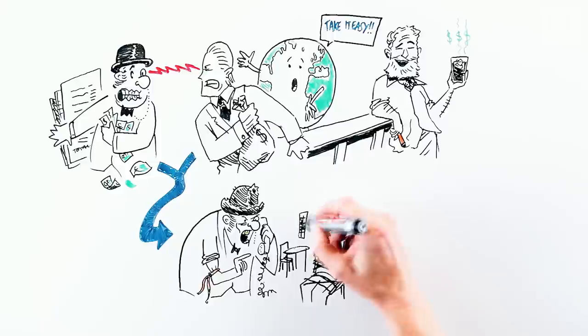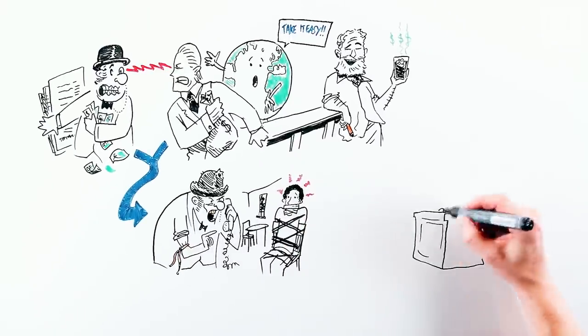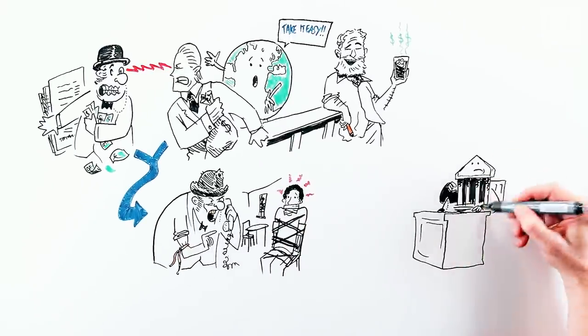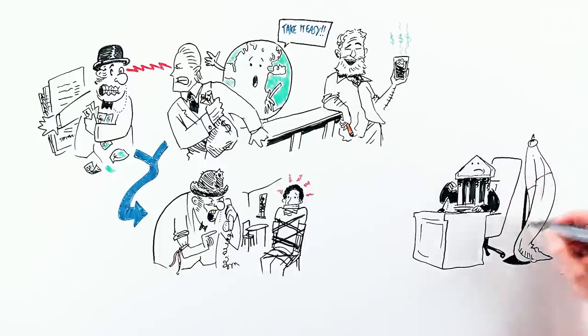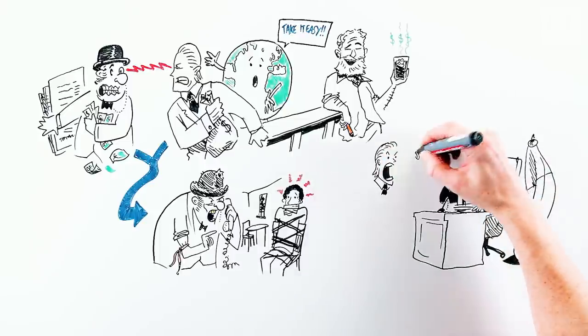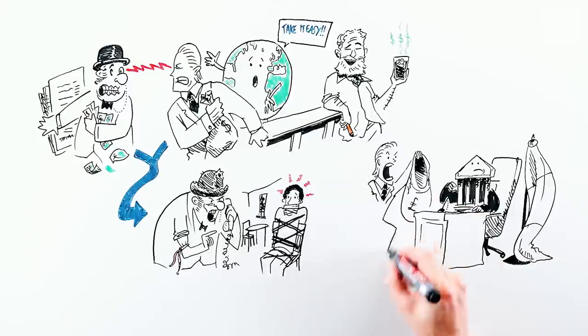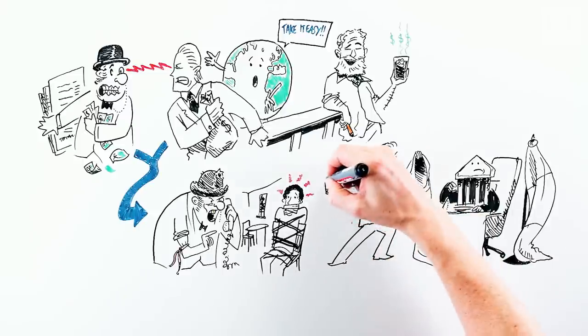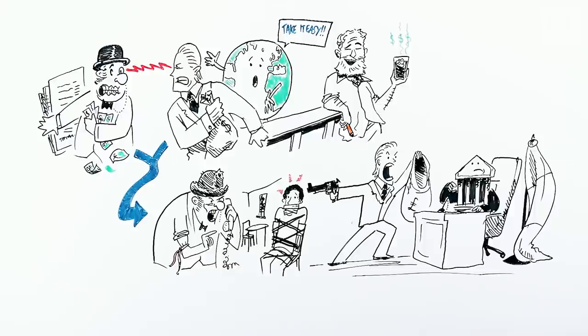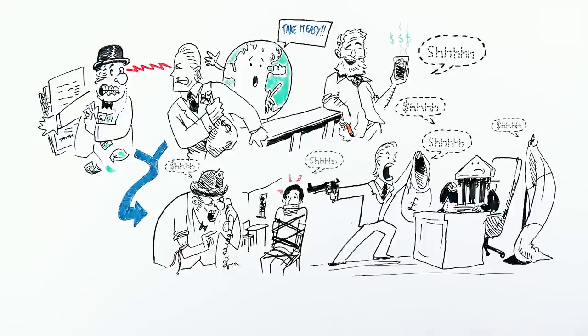It was like a classic hostage situation. The bankers, the kidnappers in this story, walked into governments all over the world and demanded a ransom, a bailout. Put the money in the bank. And if the state didn't hand over the cash, the bankers threatened to shoot the hostage, the economy. The dirty little secret was that more and more debts were passed on to more and more people who had nothing to do with those debts in the first place.